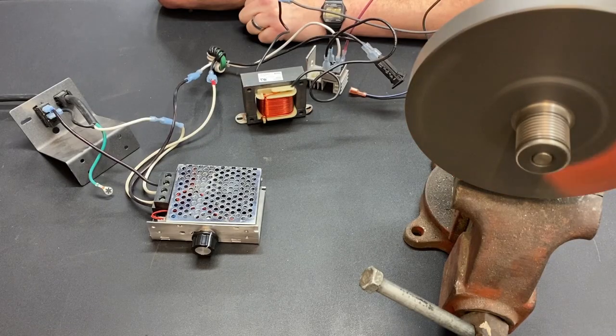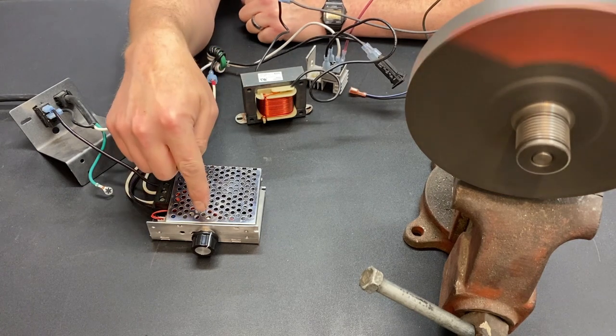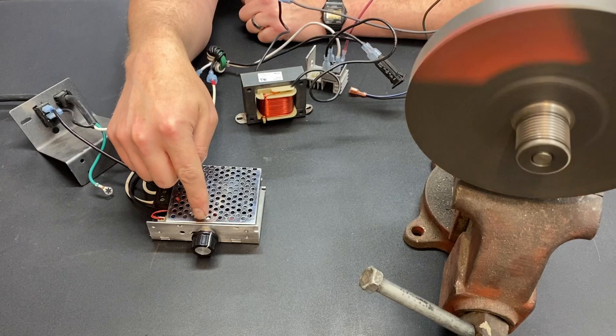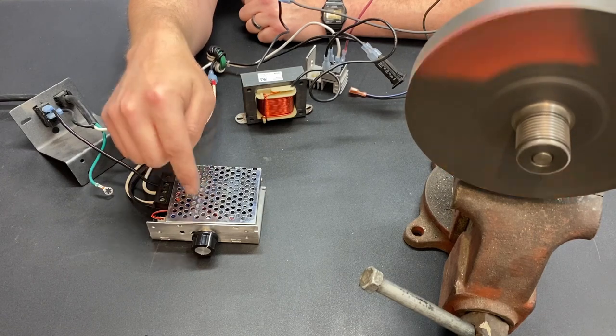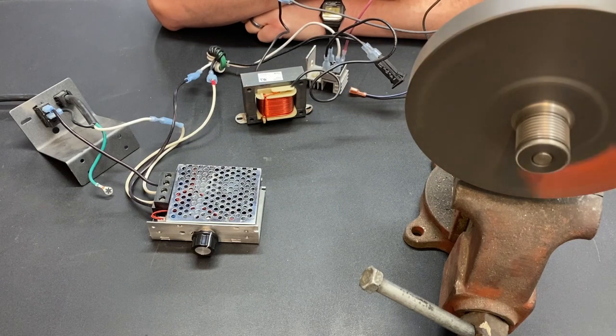Greetings, fellow DIYer, and welcome to my video. The problem is, inside this SCR voltage controller is a potentiometer, and the potentiometer that comes with this unit is way too big. But I'm going to show you what you need to know to be able to replace it with the correct one.